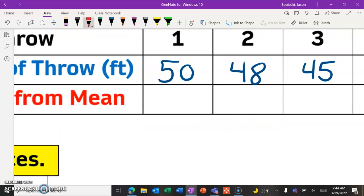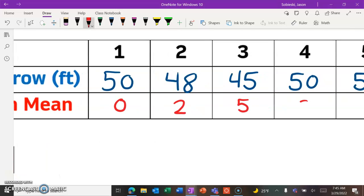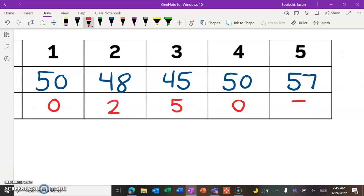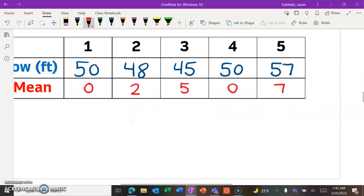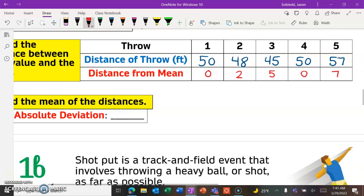Well, how far away is 50 from 50? Zero. 48 is two away from 50. 45 is five away from 50. 50 is zero away from 50, and 57 is seven away from 50. That's the key that we need.